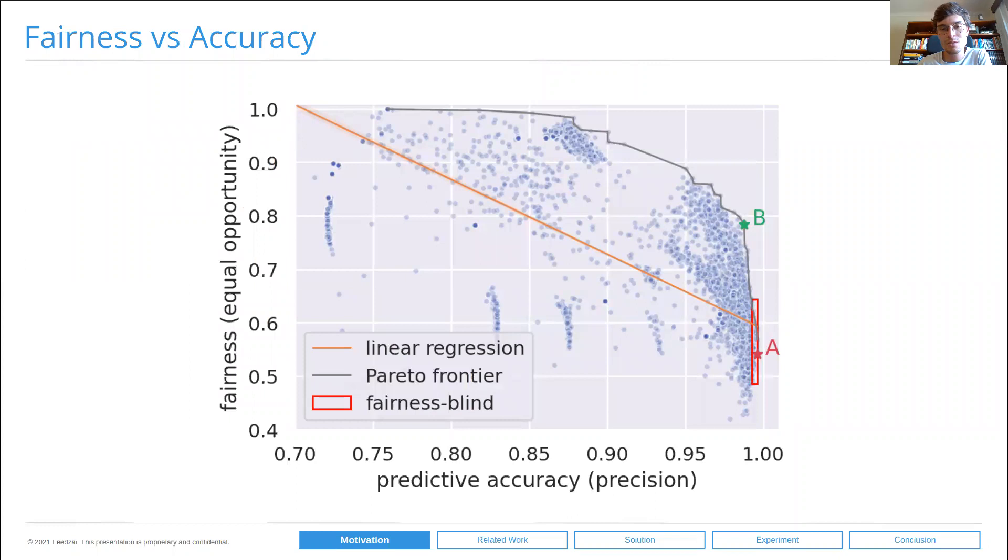But first, let's take a short intermission to illustrate our problem through this plot. This is a plot of fairness versus predictive accuracy on a well-known dataset from the fairness literature, the adult income dataset. From here we can draw two key insights.